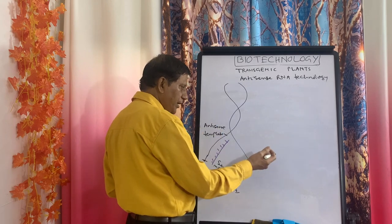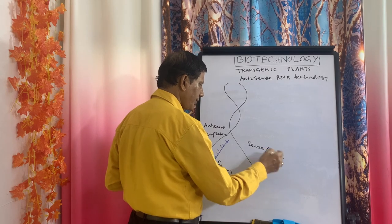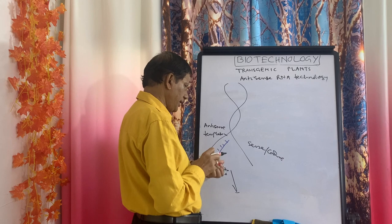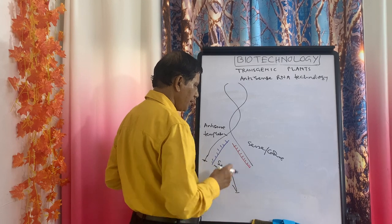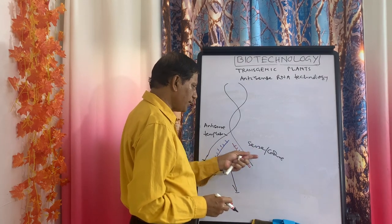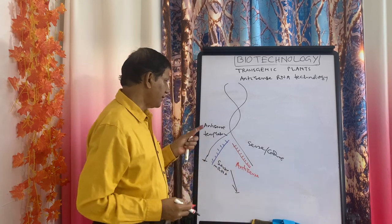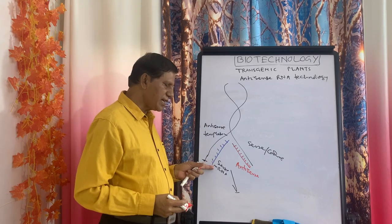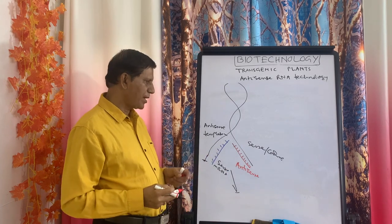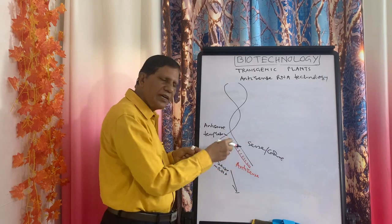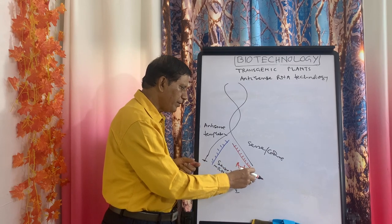Now, if you think of the other strand, this is known as the sense strand or coding strand. If this strand also produces one mRNA, what will its name be? Since it comes from the sense strand, this mRNA will be antisense. That means the antisense DNA strand synthesizes sense mRNA, while the sense DNA strand synthesizes antisense mRNA. Since the antisense and sense strands of the DNA are complementary to each other, naturally the sense mRNA and antisense mRNA are also complementary to each other.